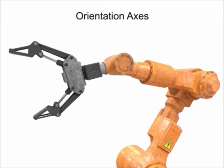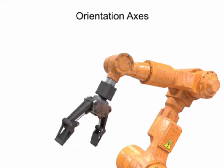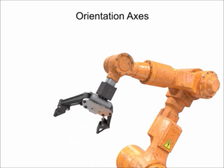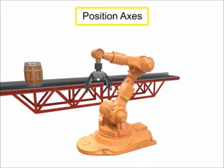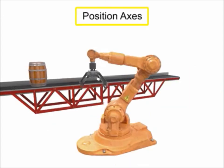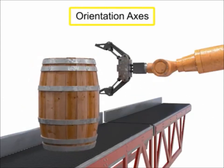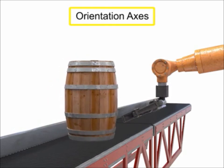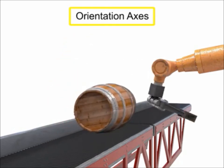Pitch moves the tool vertically. Roll rotates the tool about its center axis. Yaw turns the tool left and right. The position axes movement at the waist, shoulder and elbow, along with the orientation axes movement of pitch, roll and yaw, allow the robot to accomplish its tasks within the work envelope.